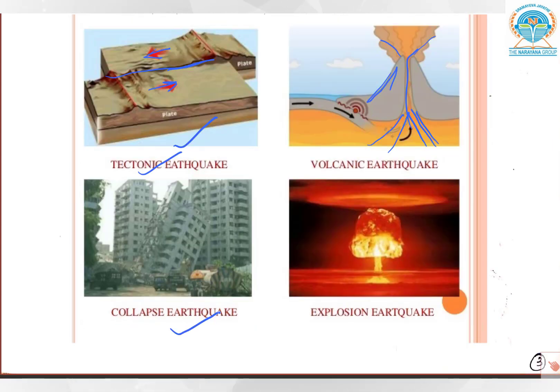Now this is collapse earthquake. Collapse means huge buildings and structures are collapsing because of tremors. This happens mostly around mining regions where intense mining activity causes underground mine roofs to collapse, causing great damage to people.